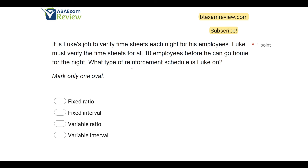Ratio schedules are based on a number of responses, while interval schedules are based on time. Let's look at Luke's schedule. He has to verify the timesheets for 10 employees before he can go home. Is reinforcement of going home based on time or responses? Well, it's based on responses. Luke has to do all 10 employees' timesheets before he can leave — doesn't matter if it takes him five minutes or three hours. So if it's based on responses, we know it's a ratio schedule.